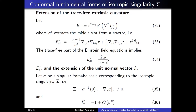Going back to the trace-free part of the Einstein field equations, the entire right-hand side expression of equation 33 equals the trace-free part of the stress-energy tensor density divided by (n − 2) — that's equation 34.